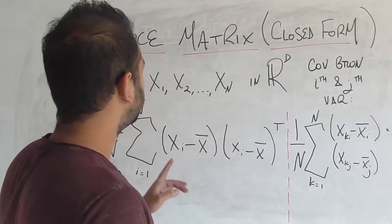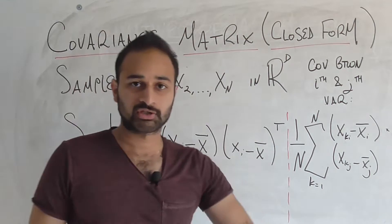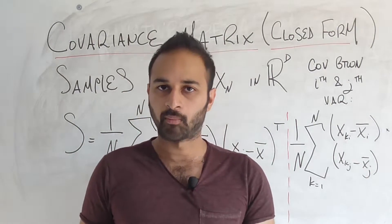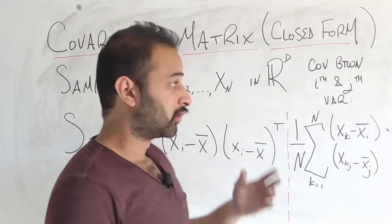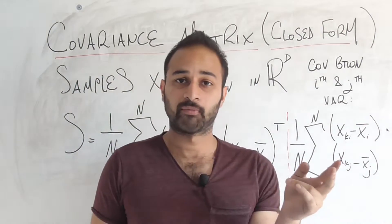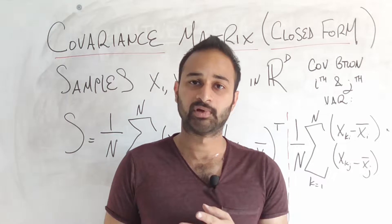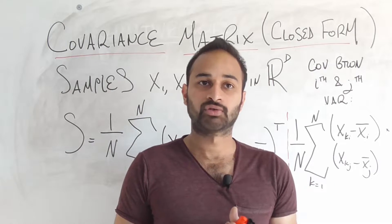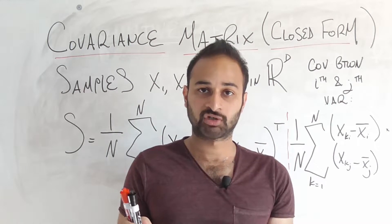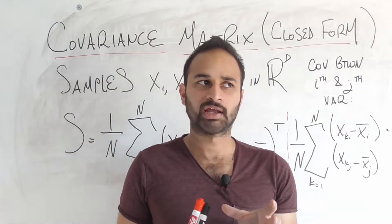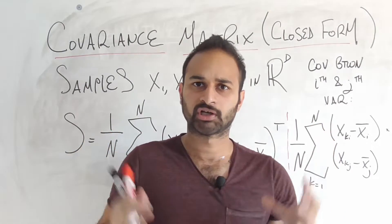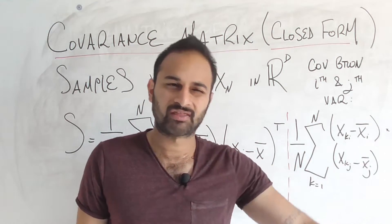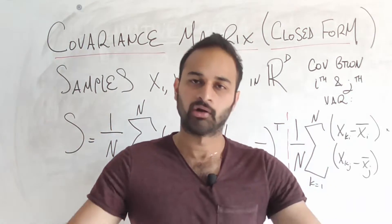Hello everybody. In this video we're going to be revisiting the covariance matrix, which we already have a video for. Except this time we'll be looking at a closed vector form — vector multiplication — for the covariance matrix. In the previous video, we defined the covariance matrix and worked out how to explicitly calculate a simple 2x2 version for a specific case. We didn't, however, look at a quick formula for how to express the covariance matrix in a compact form. I originally wanted to put this content in that video, but it would have gotten really big, so here we are.